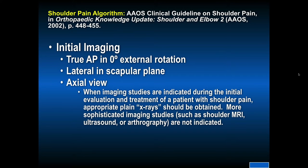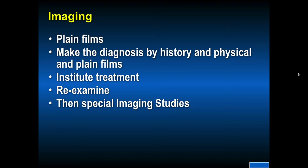Now we'll talk about imaging. Plane films are very important. The American Academy of Orthopedic Surgeons describes the initial imaging that should be obtained: a true AP in zero degree external rotation, a lateral view in the scapular plane, and an axillary view. These plain x-rays should be done prior to any MR imaging. I also like to get a view called a Stryker view, which is an AP view with the arm externally rotated. The diagnosis can be made by history, physical, and plain films, and then treatment can be instituted.